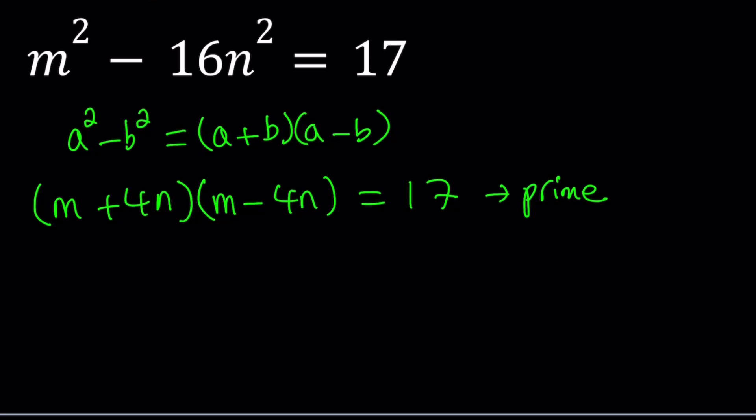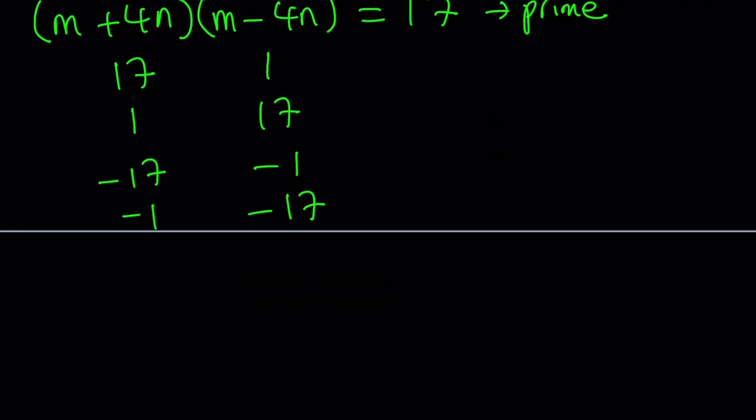If m and n are integers, then m plus 4n is an integer and m minus 4n is also an integer. So can you find two integers whose product is 17? And the answer would be 17 times 1, 1 times 17, negative 17 times negative 1, and negative 1 times negative 17. So that gives us four cases. Since we didn't restrict our solutions to positive integers or certain integers, then we're going to be looking at all the cases. So let's go ahead and take a look at each case.